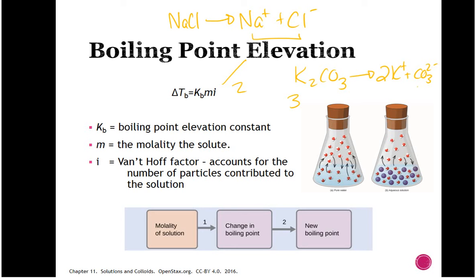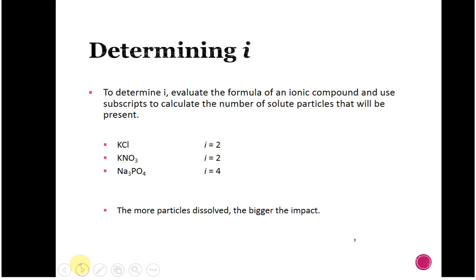Boiling point elevation is calculated by finding the molality of the solution, then multiplying it by the constant and i to get ΔT. If you know the original boiling point and the change, you can find the new boiling point. Remember: colligative properties depend on amount, not identity — so the more particles, the higher the van't Hoff factor, and the bigger the impact.